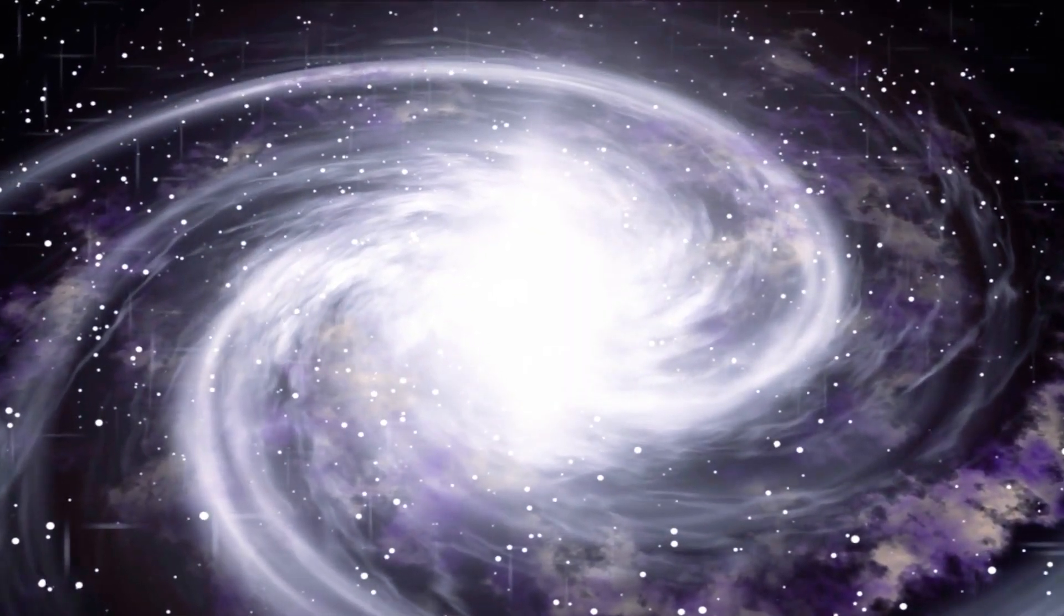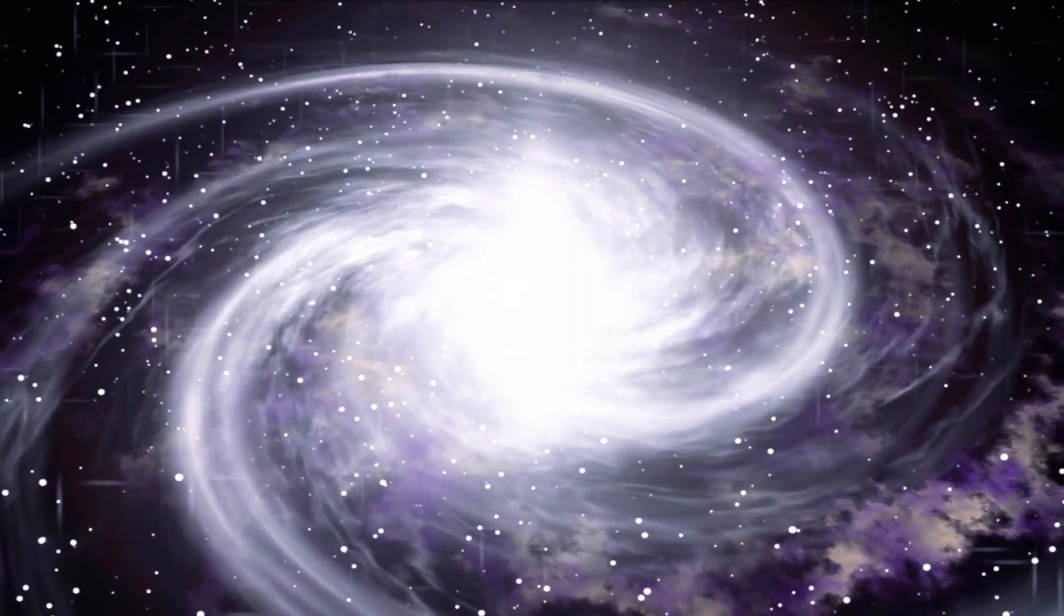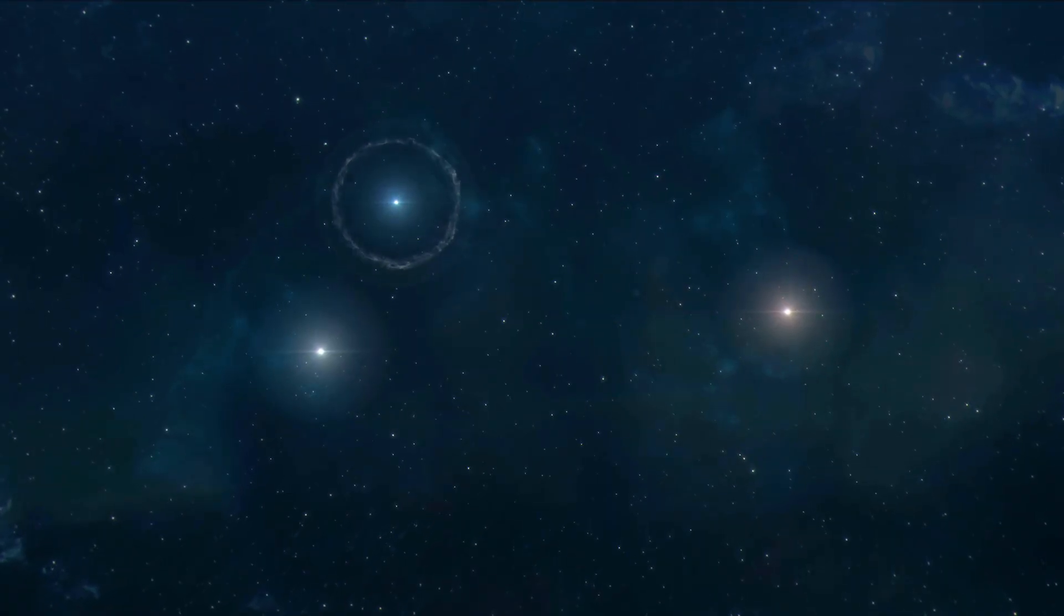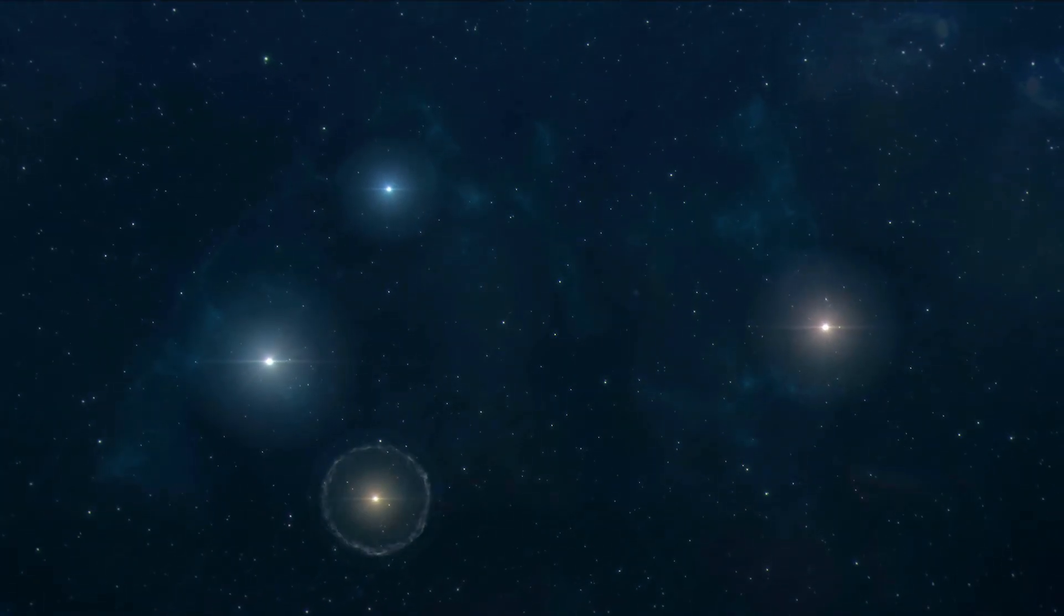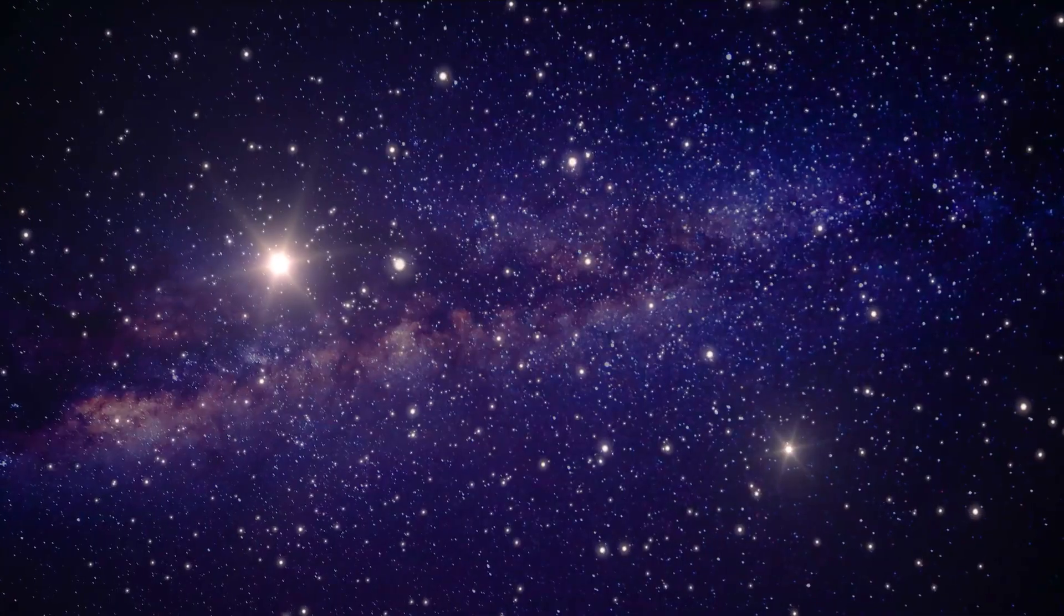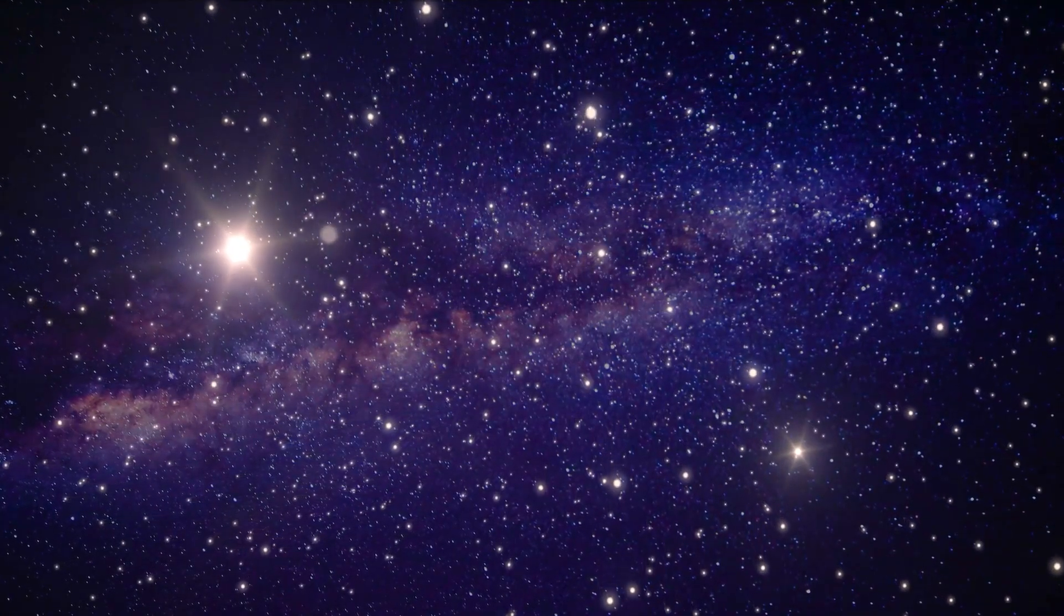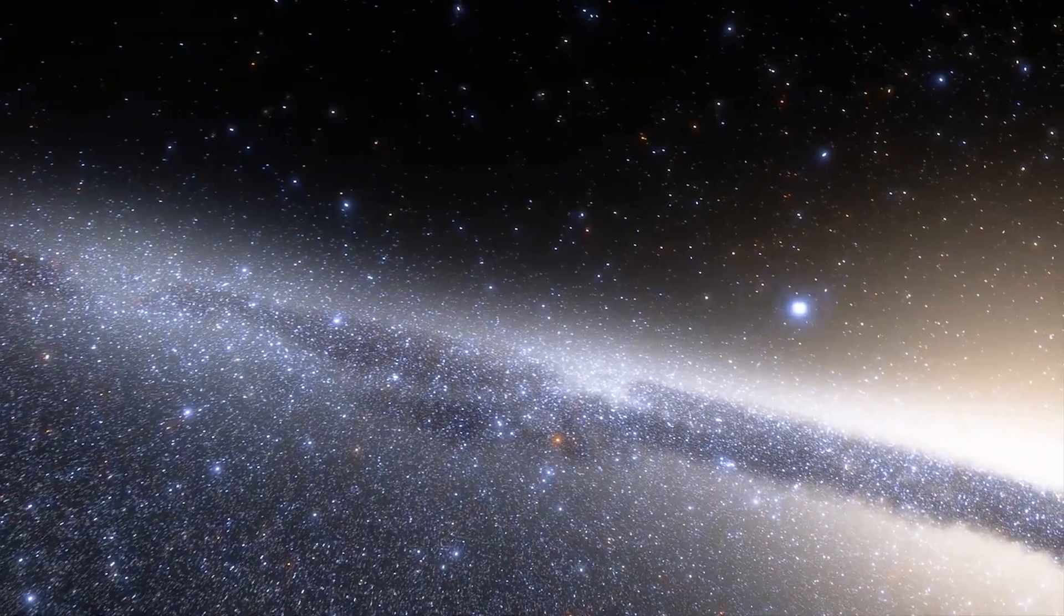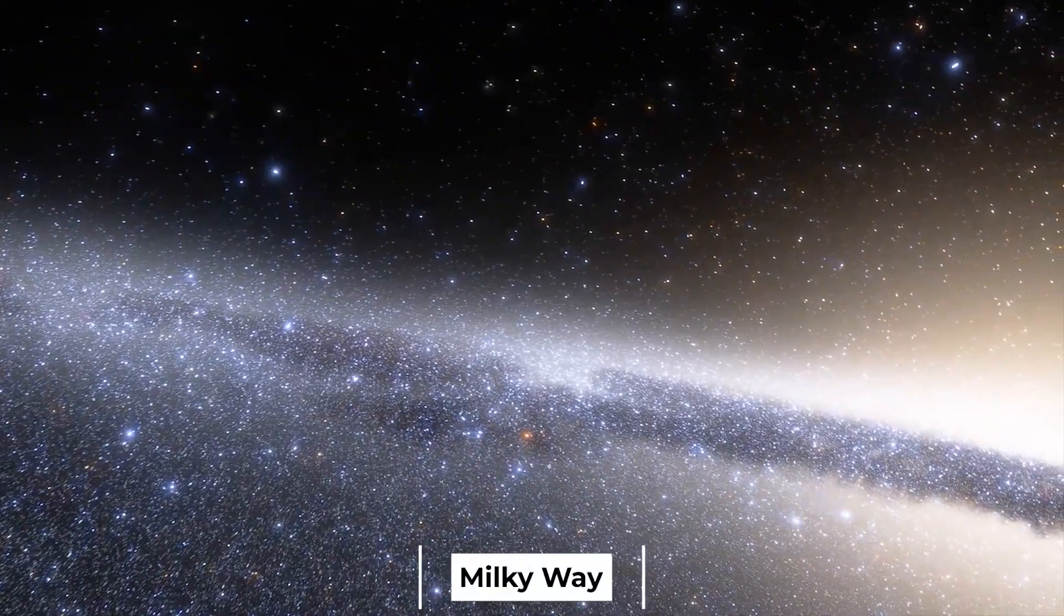As a result, open clusters are found in spiral and irregular galaxies, where new stars are created, but not in elliptical galaxies, which do not form stars and would have long since broken up if any open clusters existed. Open clusters can be seen within and between the spiral arms of the Milky Way.